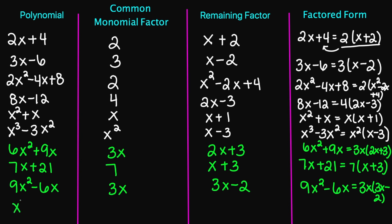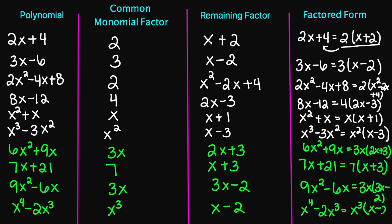Let's try one more. Let's say we have x to the 4th minus 2x cubed. So my common factor is going to be x cubed. If I factor out an x cubed, my remaining factor is going to be x minus 2. So my factored form is going to be x to the 4th minus 2x cubed equals x cubed times x minus 2.